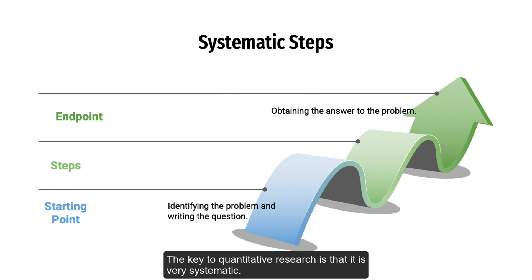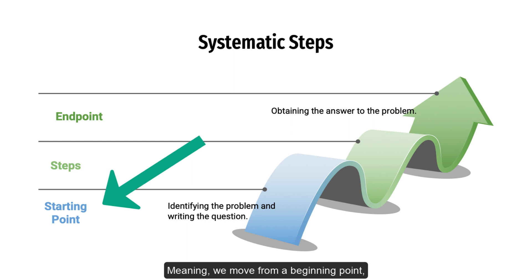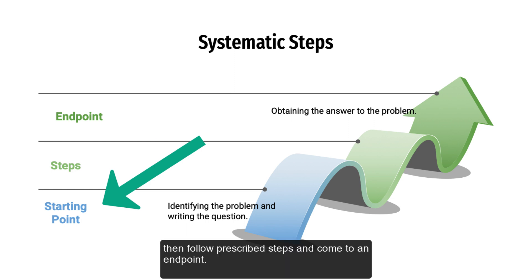The key to quantitative research is that it is very systematic, meaning we move from a beginning point, then follow prescribed steps, and come to an end point.